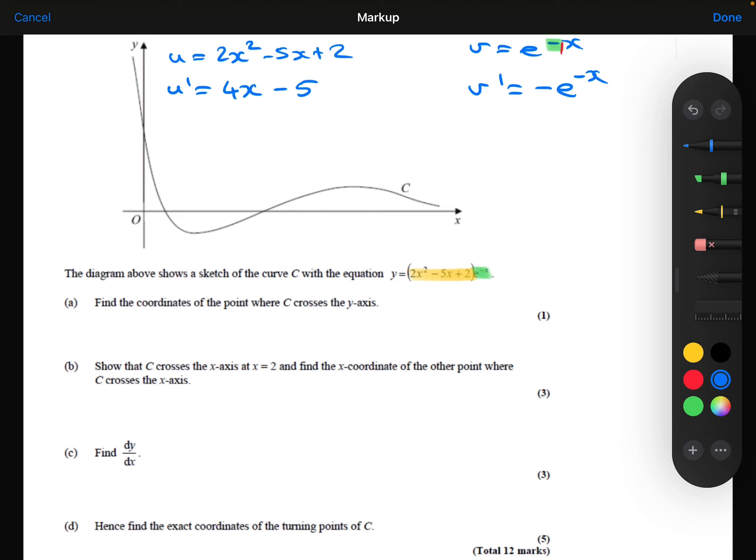So remember that the product rule says it's u' v plus v' u. So applying that in this case, my u' v will be (4x minus 5) multiplied by e to the minus x, plus the v' u.